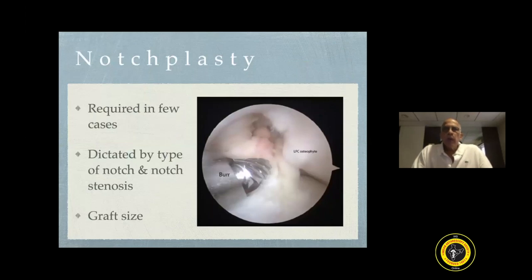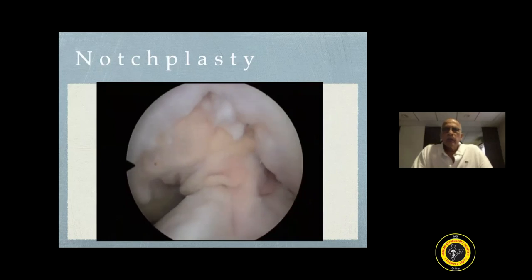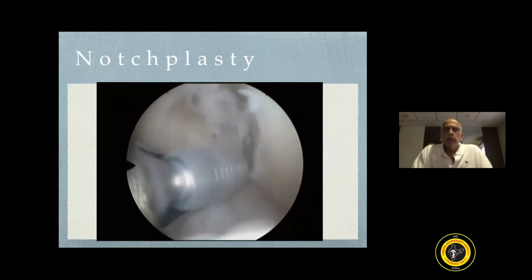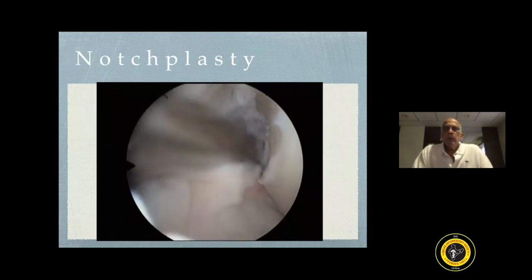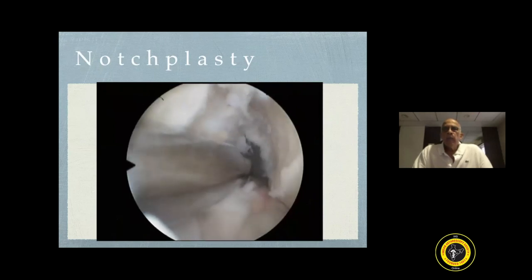Notchplasty is not required in all cases. It is dictated by the type of notch and whether the notch is stenotic, and should not be done routinely as a part of ACL reconstruction. This is a case where the notch is extremely stenotic — as you can see, there are osteophytes which are narrowing the notch. A burr and then a bone cutter have been used, and one can now see right up to the posterior margin of the intercondylar notch. It is only when you can see this area that you can select your femoral isometric point or the anatomic footprint of the ACL.